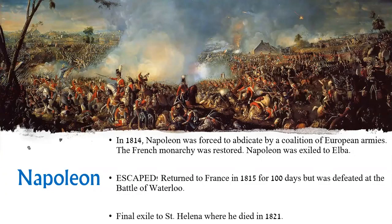In 1814, Napoleon had to abdicate his throne due to a coalition of European forces. He was forced to live on the island of Elba after the Treaty of Fontainebleau was signed. However, in 1815 he escaped, went back to France, gathered loyal followers, and became emperor again. But it was only for 100 days before he was defeated at the Battle of Waterloo. He was exiled once again, died in 1821, probably of stomach cancer — though some think he was poisoned — and was later brought back to France and buried with other military leaders.